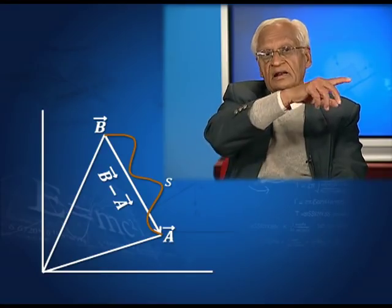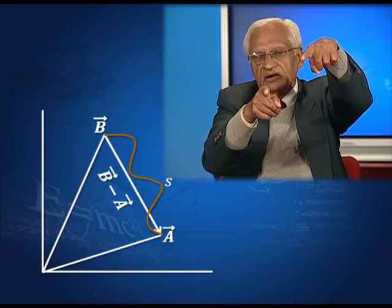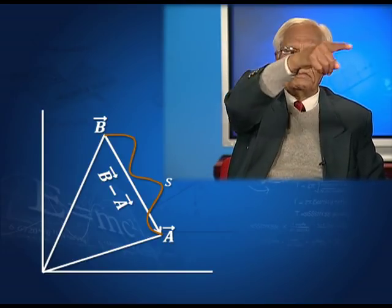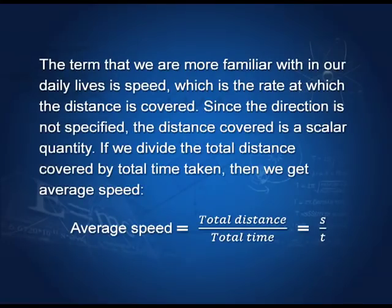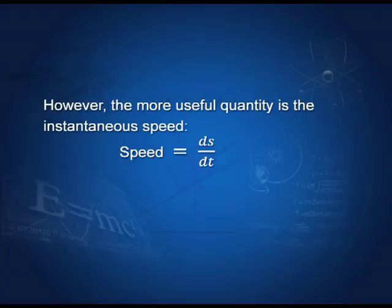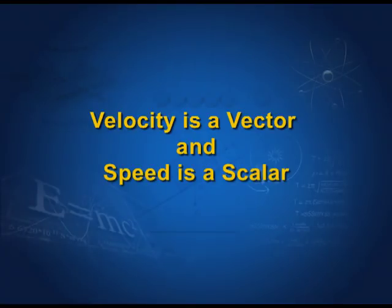What is speed? If we measure the length along the path and denote it by small s, then the speed would be the total distance travelled divided by the total time taken — that is, s by t. This is the average speed, because we have taken the total distance divided by the total time. If we take small distance and small time, we get instantaneous speed, ds by dt, where small s denotes the distance travelled. Since ds is not a vector but a scalar — it is the distance covered — speed is a scalar, whereas velocity is a vector.